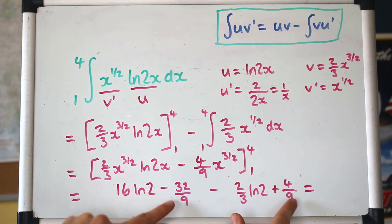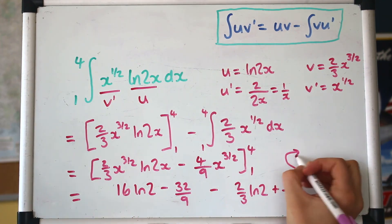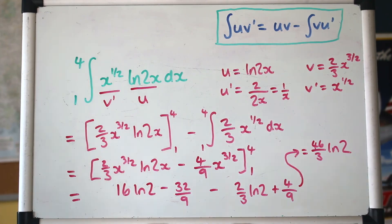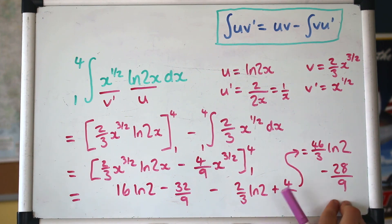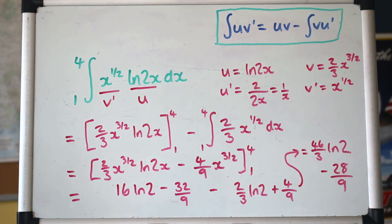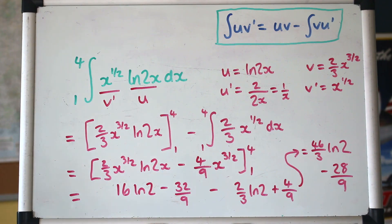Now we can collect the logs and collect the fractions. So I get 46 over 3 log 2 minus 28 over 9. Of course, the temptation, isn't it, is to put all of this in your calculator, and it would give you a decimal answer, probably. So if you're being asked for something in a certain form, like a log 2 plus b, or it wants it in an exact form, then you will have to be able to do some of that working yourself. Of course, using the calculator to check steps and things, but you need to be able to follow through that logic. Great!